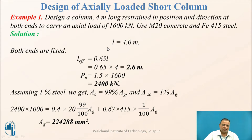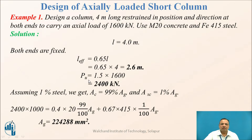The unsupported length is 4 meters. Both ends are fixed. Therefore, effective length is 0.65 times the unsupported length. The factored load is 1.5 times the applied load, using a multiplication factor of 1.5.